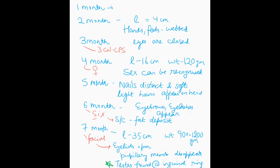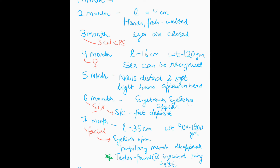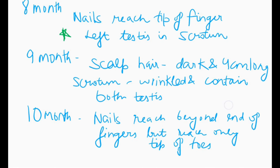Continuing the revision: Seven months — facial nerve not fully active so eyelids are open, pupillary membrane disappears, testes at external inguinal ring, length 35 cm, weight 900 to 1200 grams. Eight months — nails reach the tip of the fingers, left testis in scrotum. Nine months — both testes in scrotum, scalp hair dark and four centimeters long.